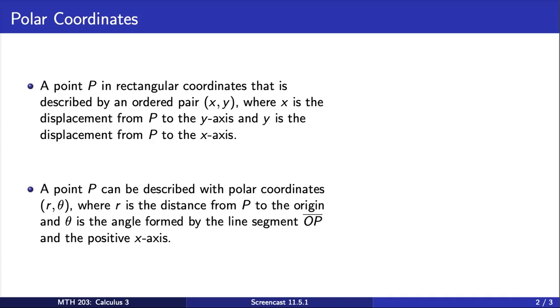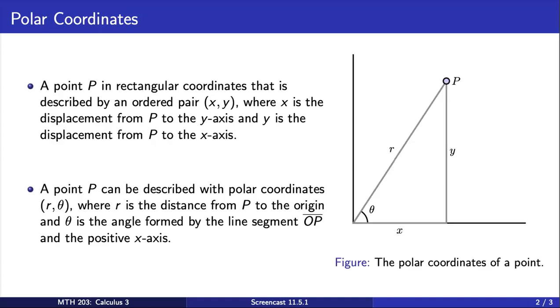Let's look at a picture of what this looks like. Here is the point P. We can see that P can be described by an x-coordinate, which is the displacement from the y-axis, how far P is from there, and a y-coordinate, which is the displacement from the x-axis.